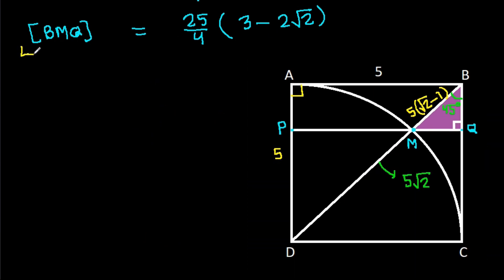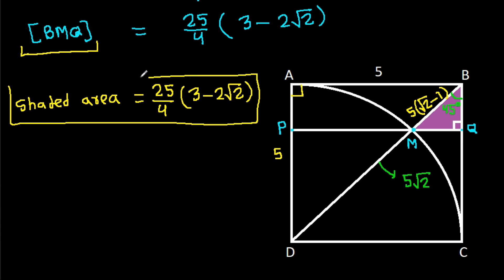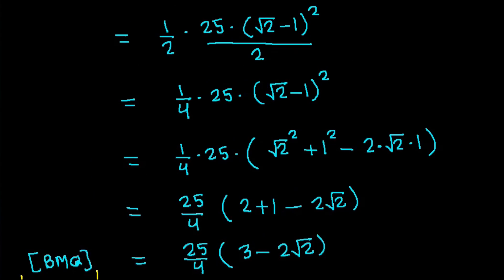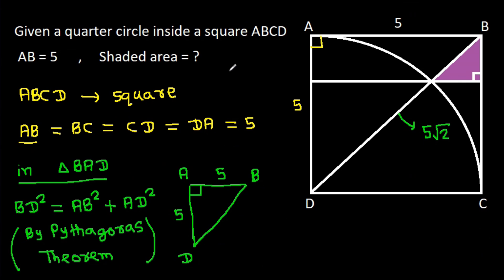The area of triangle BMQ is the shaded area, which equals 25 over 4 times (3 minus 2√2).